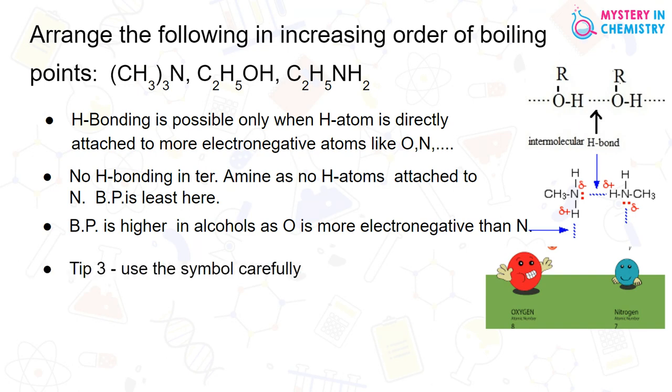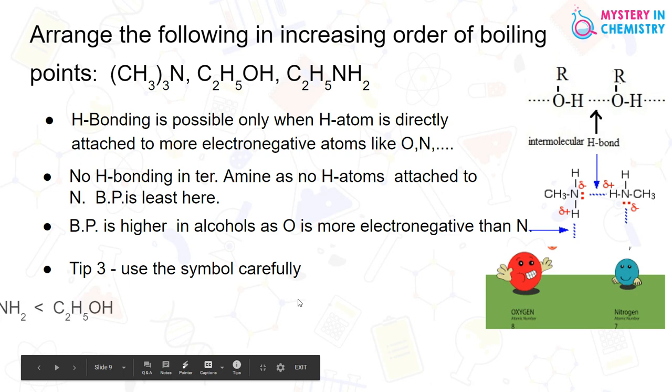But here, recall the third tip: use the symbol carefully. So, all the molecules you can arrange and you are using the symbol carefully. The right answer is: alcohol has the highest boiling point and tertiary amine should have the least boiling point. So, everything is clear and the answer is correct.